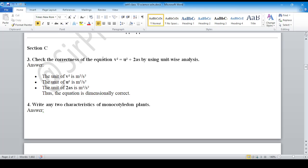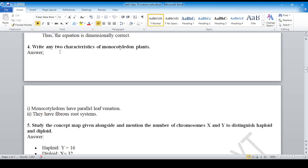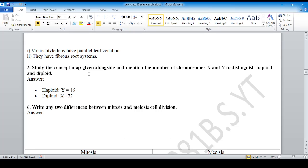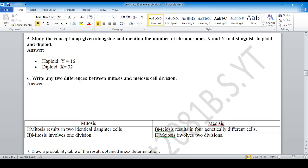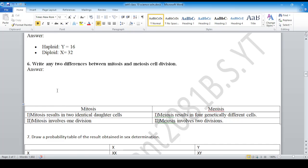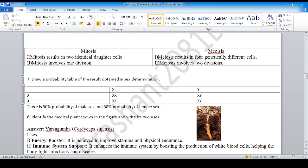Question 4 and 5: You can see the answers in the book. For X, which is diploid with 32 chromosomes, the haploid will have 16 chromosomes. Write any two differences between meiosis and mitosis. Draw a probability table of the result obtained in sex determination. Female is XX, male is XY. Do a cross: there's 50% chance of female offspring and 50% chance of male offspring.